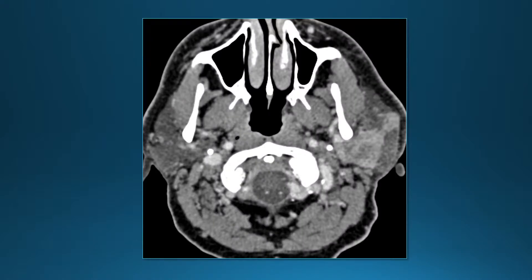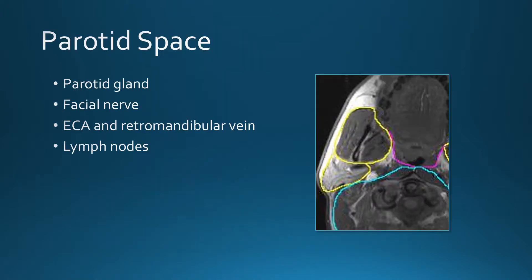Next space: here's a lesion that is clearly in the parotid gland, so we're dealing with the parotid space. The parotid space contains the parotid gland, facial nerve, external carotid artery and retromandibular vein, and lymph nodes.